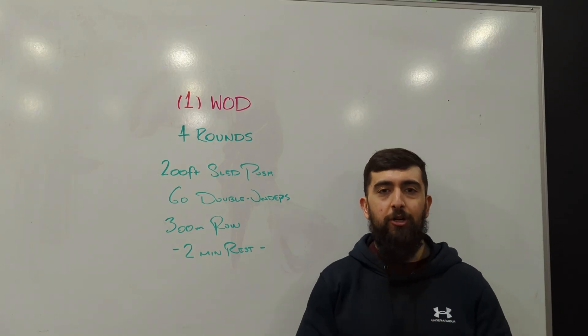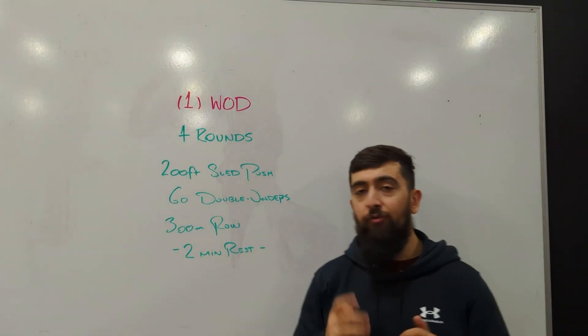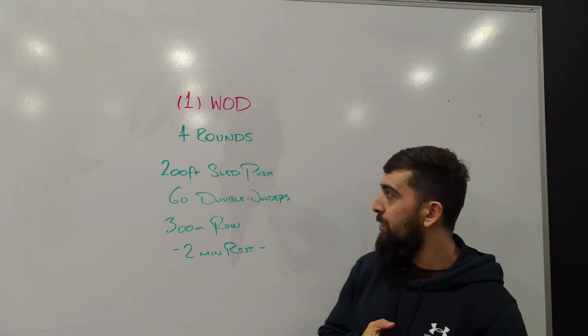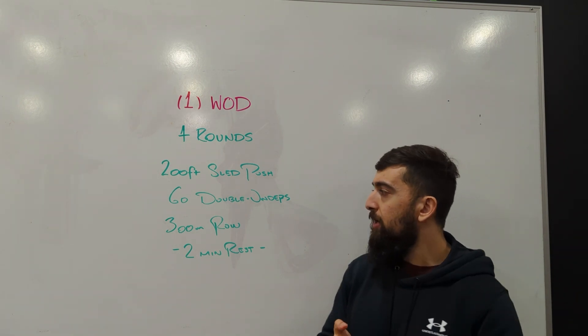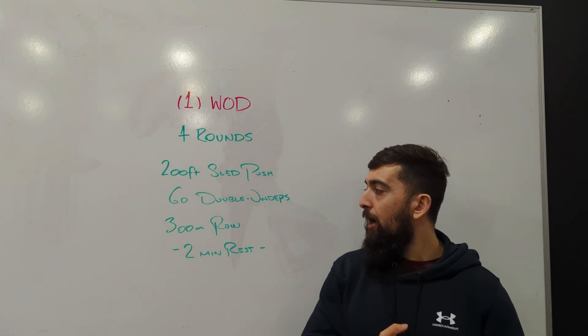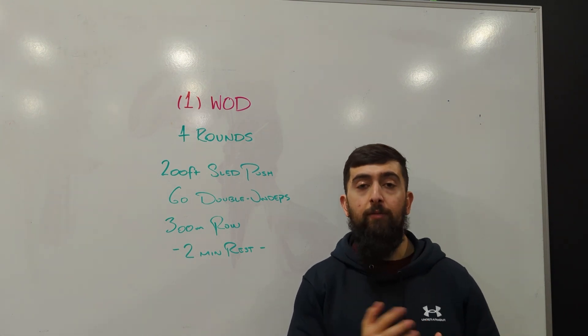Alright, happy Tuesday guys. We got some endurance work today. We're gonna do four rounds: 200 foot sled push, 60 double unders, 300 meter row, and then a two-minute rest at the end whenever you finish that round.